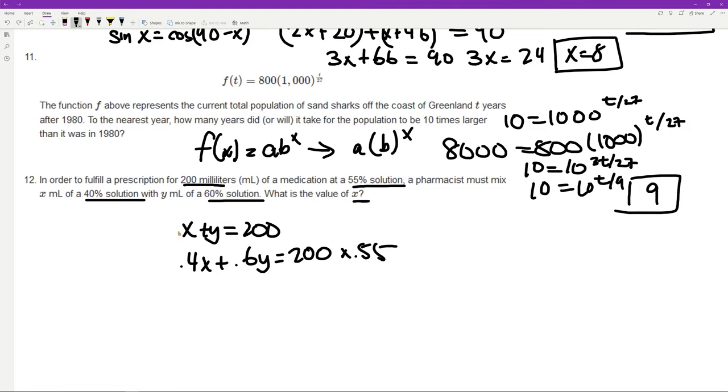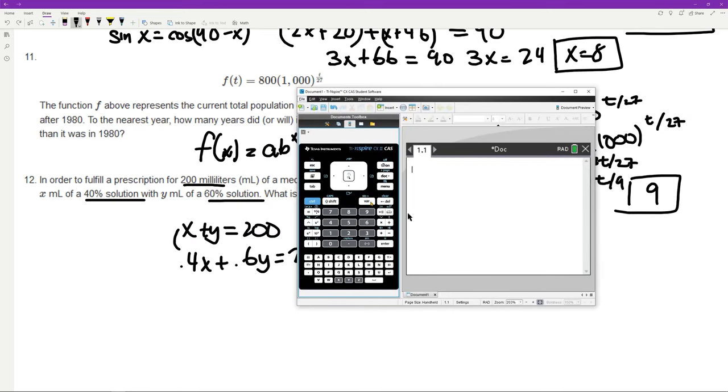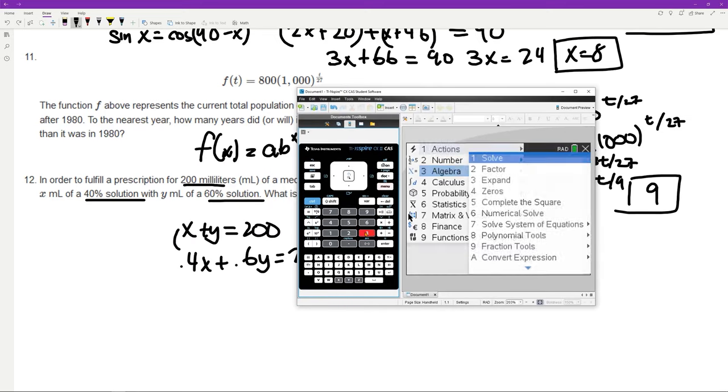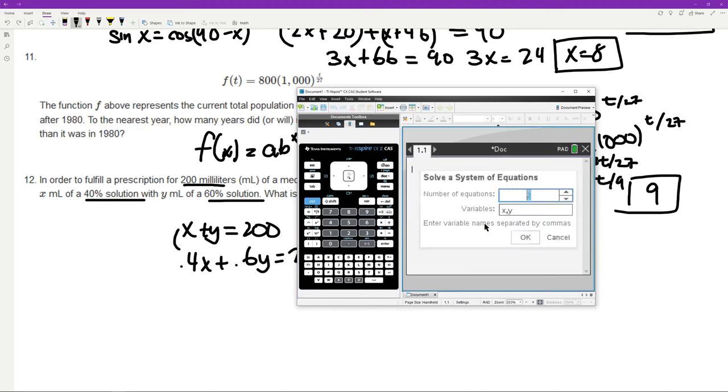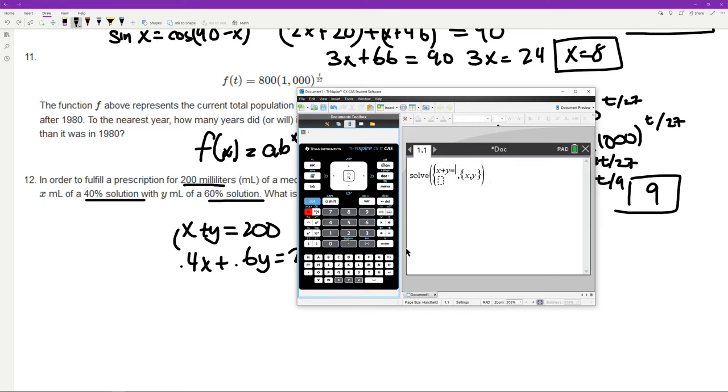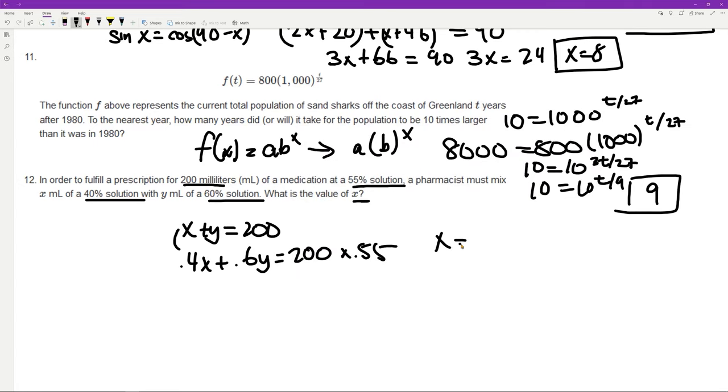I'm just going to plug it into the calculator and I'll show you multiple ways of doing so. So we can use the system equation solver: x + y = 200 and 0.4x + 0.6y = 200 × 0.55. And we get that x is 50 and y is 150. So x is going to be 50 milliliters, y is equal to 150 milliliters, and that's going to be our answer because that's what we're looking for, x.